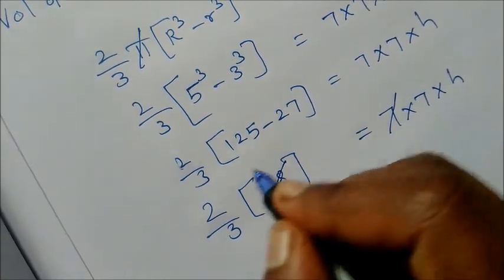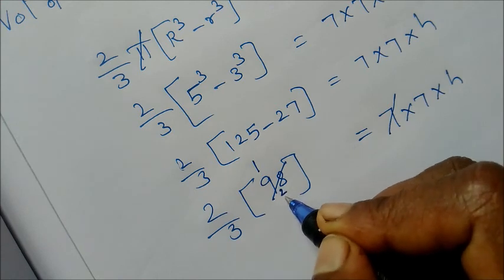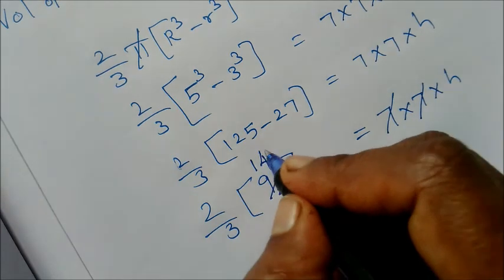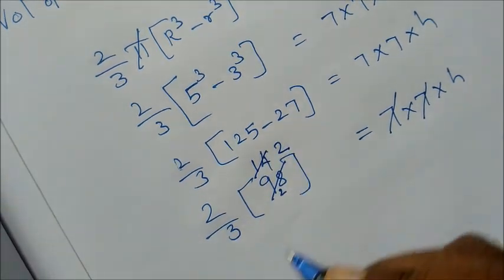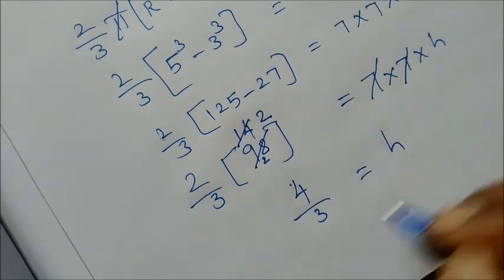Subtract: equal to 7 into 7 into h. 98 cancels from 7 table, 1 times, balance is 2. 28 is 4 times. Again 7 table, this is 2 times. Multiply: 2, 2's are 4. So 4 by 3 equal to h.